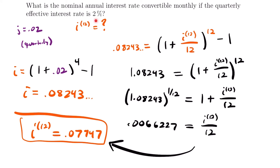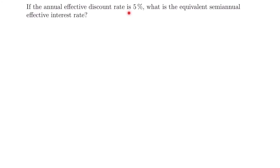We took a quarterly effective interest rate of 2%, converted it to an annual effective interest rate, and then used that to find our nominal annual interest rate convertible monthly. Let's look at another example. If the annual effective discount rate is 5%, what is the equivalent semi-annual effective interest rate? We have an annual discount rate and we're looking for a semi-annual interest rate. We know D = 0.05, and we're looking for J, which is unknown.